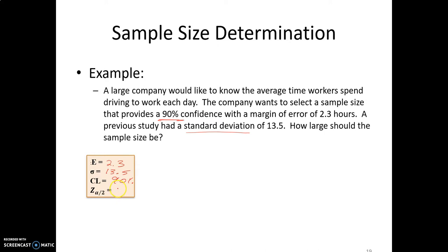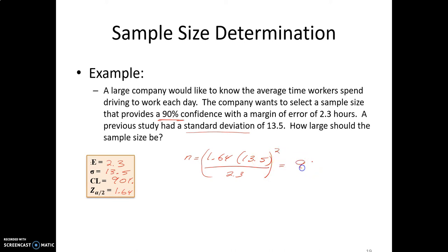Sample size determination questions always use a Z value. For 90% confidence, the Z value is 1.64. Plugging into our formula: 1.64 times the standard deviation of 13.5, all divided by the margin of error of 2.3 hours, then square everything. We get approximately 92.7. For determining sample size, we always round up — we can't survey 92.7 things.